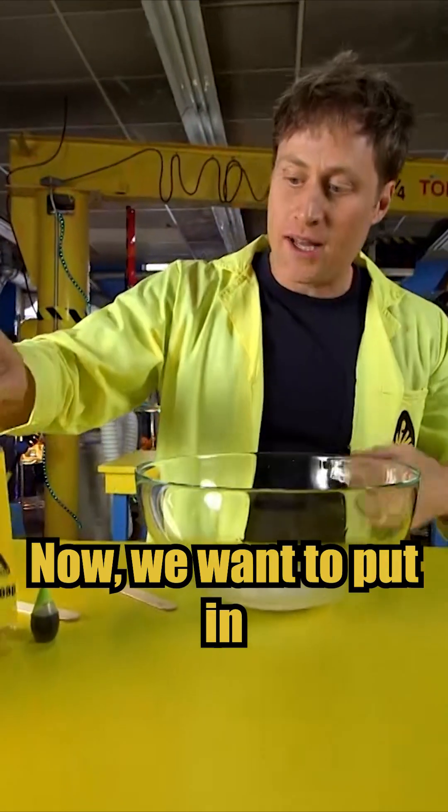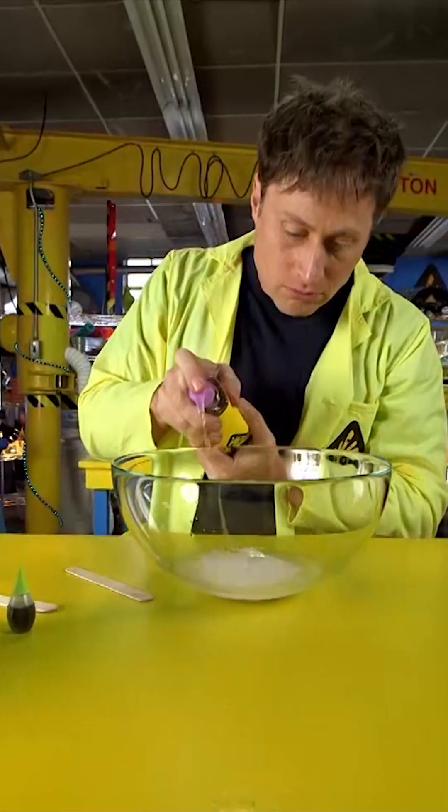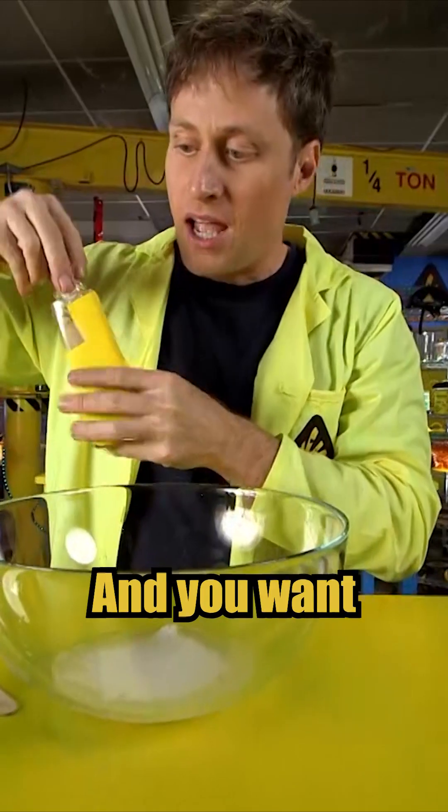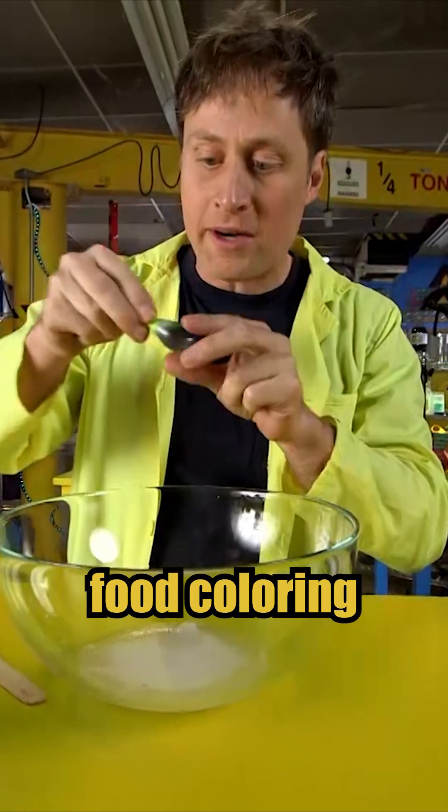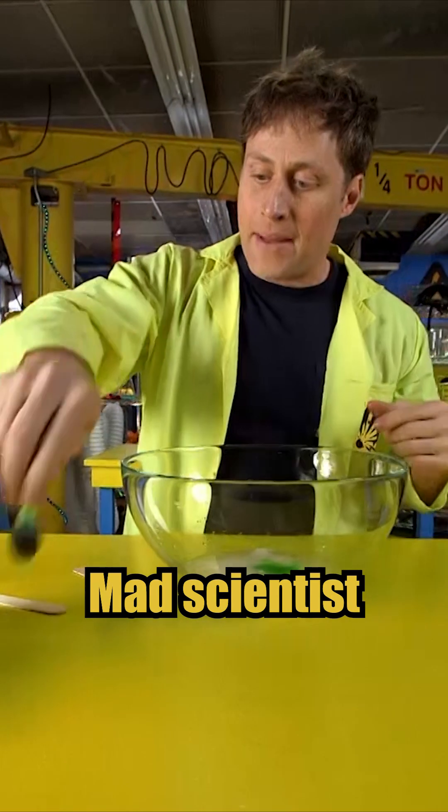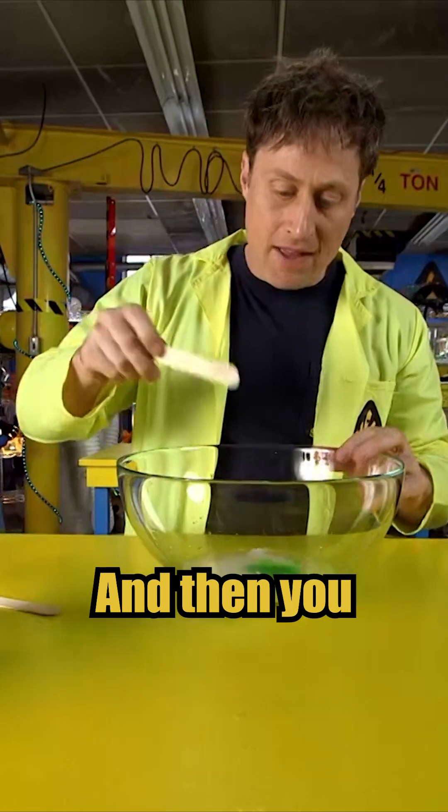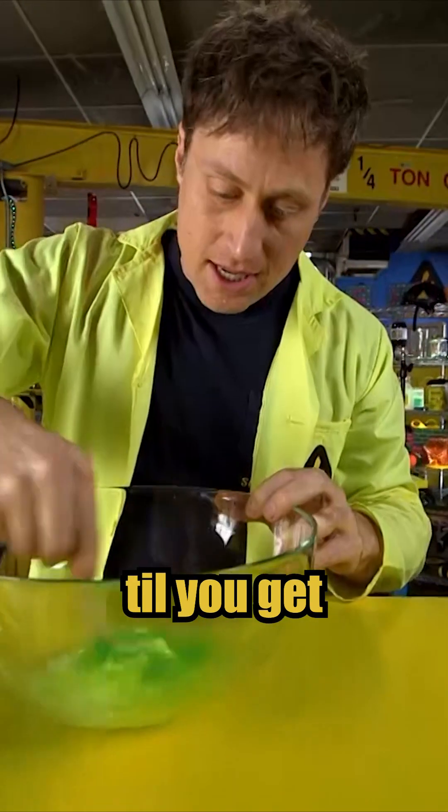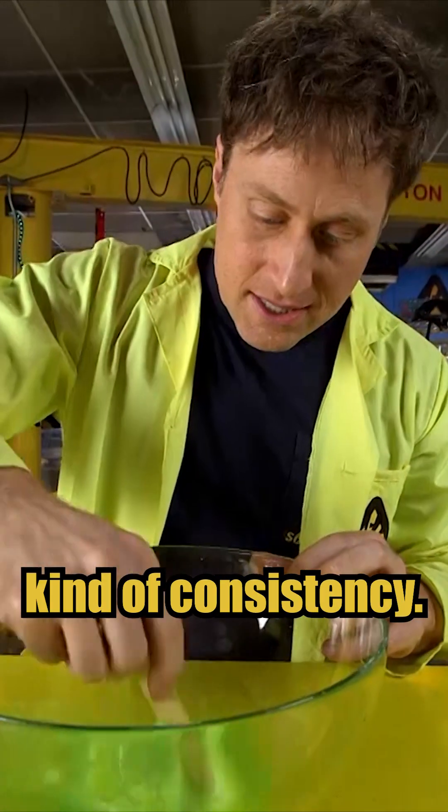Great. Now we want to put in just a little bit of soap. Maybe there. That's good. And you want to put in your food coloring. I like green. Green seems like the right slime color to me. It's the right appropriate mad scientist kind of slime. And then you want to start mixing that up till you get the right kind of consistency.